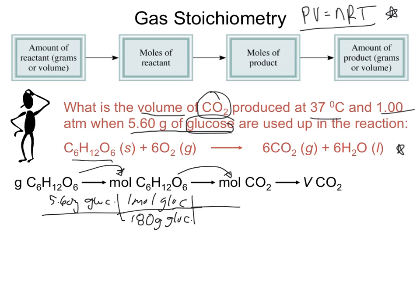Now that we're in moles of glucose, we want to go from moles of glucose into moles of CO2 using the mole ratio. The mole ratio of CO2 to glucose is 6 moles of CO2 for every 1 mole of glucose. Multiplying 5.6 × 1 × 6, divided by 180 × 1 gives us 0.187. Glucose and glucose cancel, grams cancel, moles of glucose cancel, and moles of CO2 are what remain.